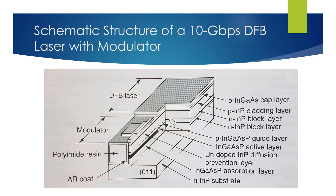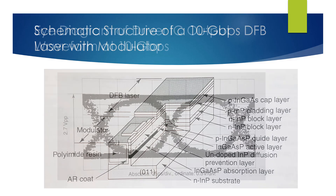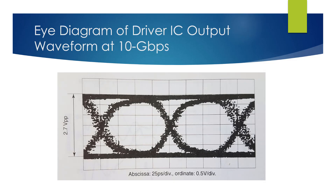This laser has a laser region length of 350 microns, and the modulator region length is 200 microns. They are separated by a 30 micron long electrode separation region. The driver IC drives the modulator at 10 gigabit per second with an output amplitude of 2 volt peak-to-peak.